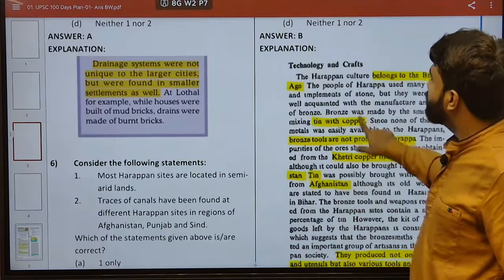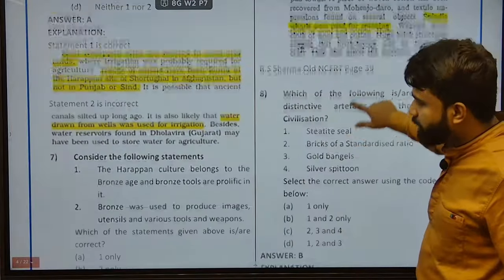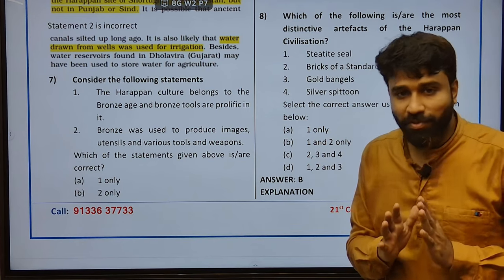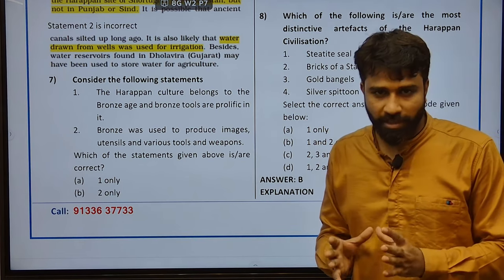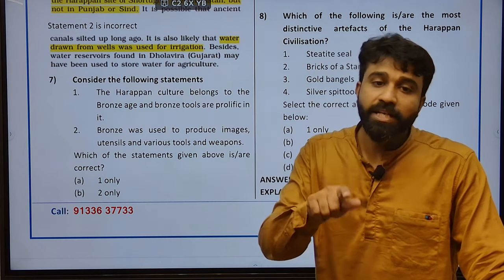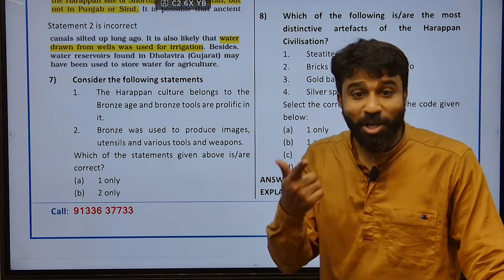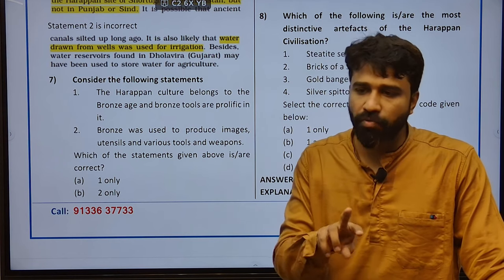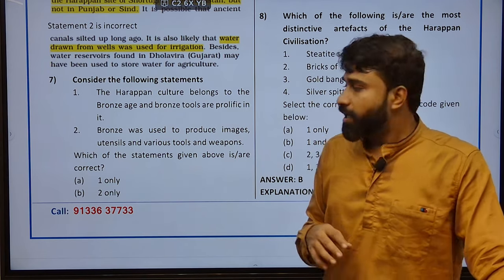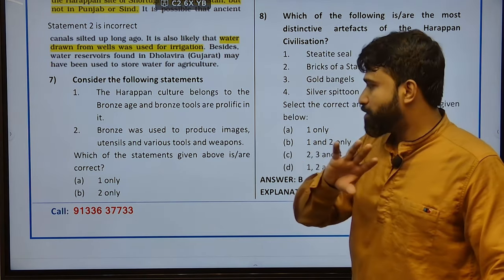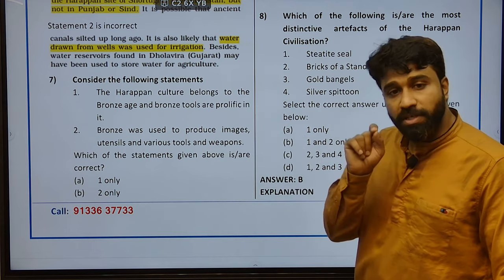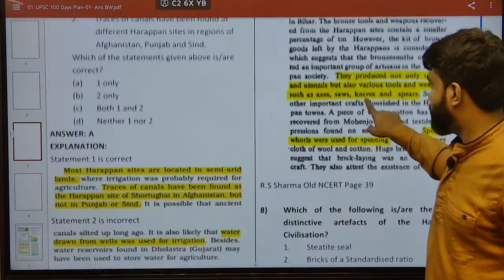Coming to the seventh question — the Harappan culture belongs to the Bronze Age, and bronze tools are not prolific. Because they had to import copper from Khetri mines of Rajasthan and tin from Baluchistan. This alloy of copper and tin was used to produce bronze. Bronze was used to produce images, utensils, various tools and weapons. Bronze tools were not prolific due to lack of abundance in that region — they used to import from other parts.